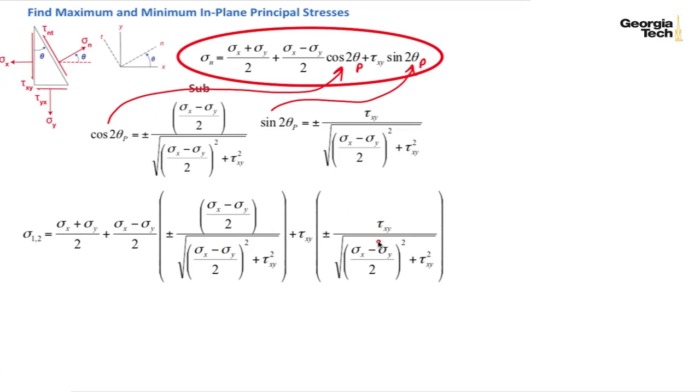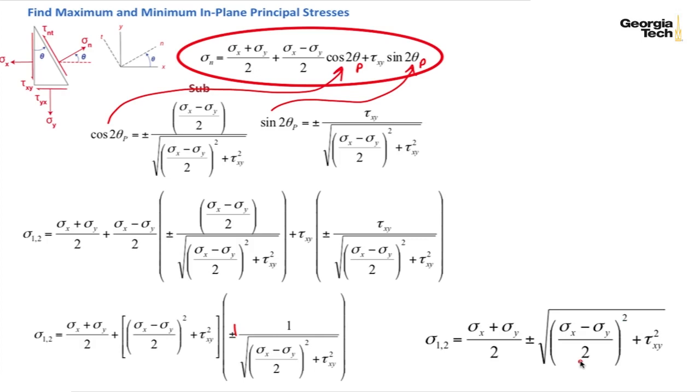We can, this value and this value is the same so we can factor that out. And we have these two terms times this entire value here. We see that we have sigma sub x minus sigma sub y over 2 squared and then the square root of that. So that leaves the square root in the numerator.